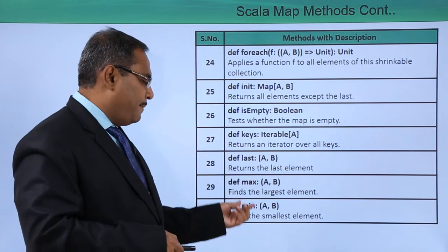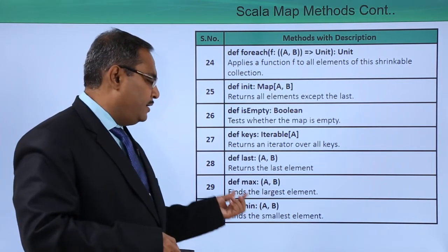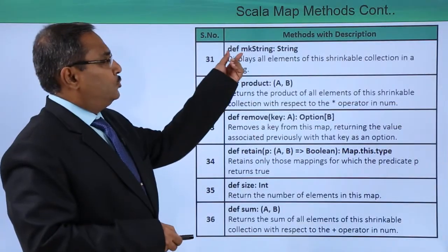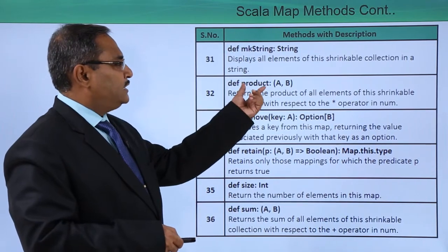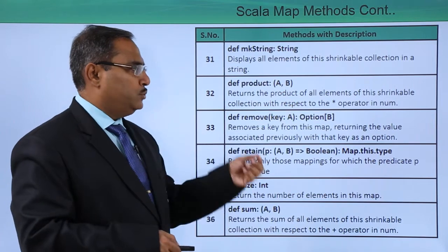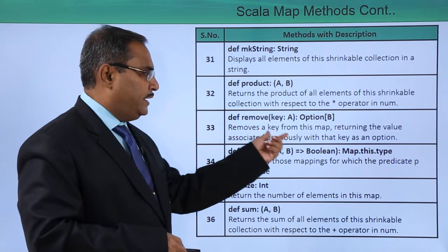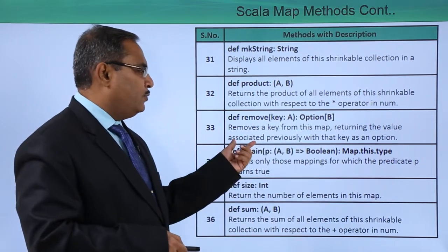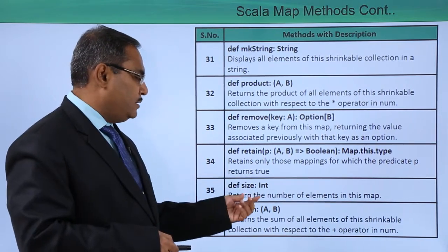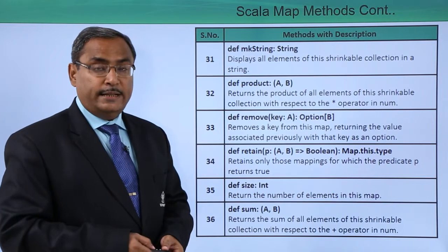Last returns the last element. We have max and min: min finds the smallest element and max finds the largest element. We have mkString and product, which returns the product of all elements of the shrinkable collection with respect to the * operator in Numeric. We are having remove, which removes the key from the map returning the value previously associated with the key as an Option. We are having size, which returns the number of elements in the map.